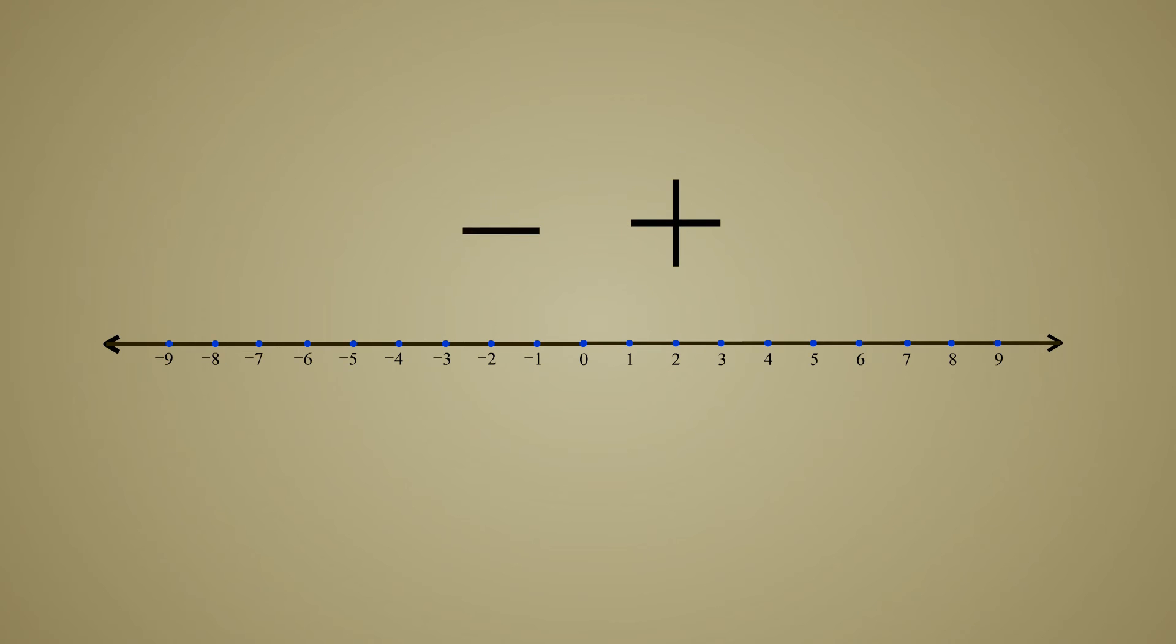With a positive or negative sign, a number can be thought of as representing not only a distance but also a direction. Just as a positive number can be thought of as representing a distance to the right of the origin, a negative number can be thought of as representing a distance to the left.